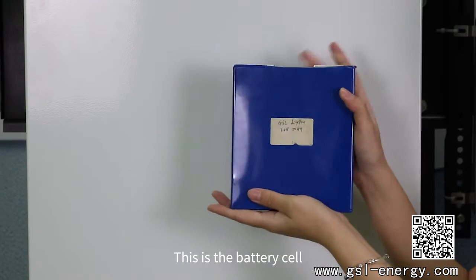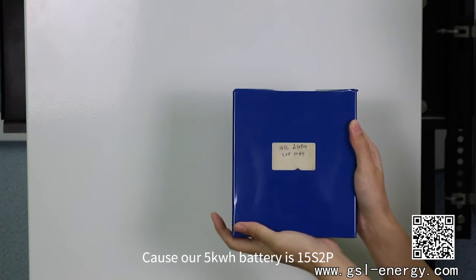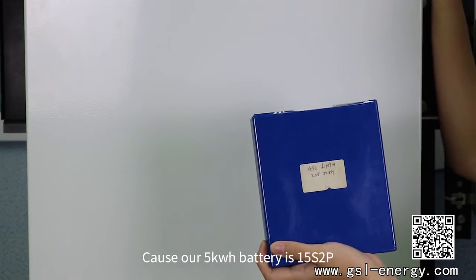This is the battery cell. It is 3.2 voltage, 50 amp hour. Because our 5 kilowatt battery is 15 series and 2 parallel, so there will be total 30 piece battery cells.